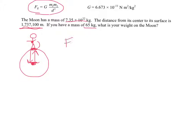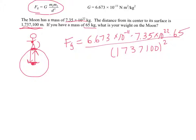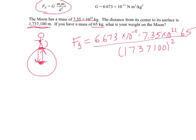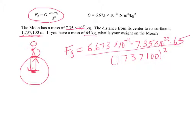So we're just going to plug in. We're going to solve for the gravitational force between us. So G, 6.73 times 10 to the negative 11 times the Moon's mass, 7.35 times 10 to the 22nd times our mass, 65, over this distance squared, 737,100 squared. And if we plug that all in, we should get our weight in Newtons. And that comes out to 105.65 Newtons.